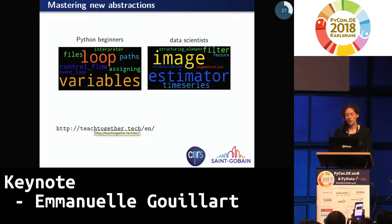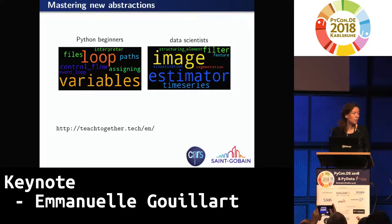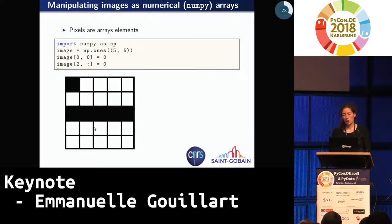For scikit-image, we can assume people already know some programming, but when you're learning data science, you have new abstractions that are as hard to master — like what is an image, which is quite an abstract concept, or what is an estimator? The first thing to do is to reduce the number of abstractions as much as possible.